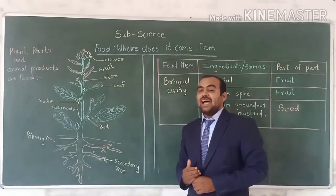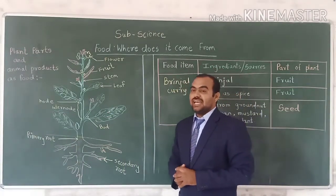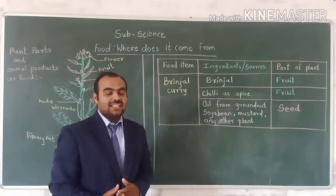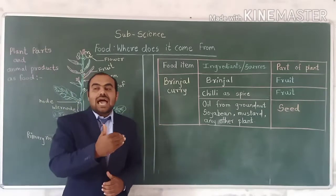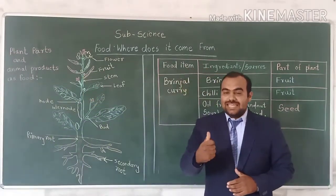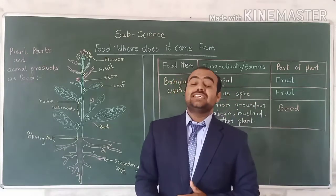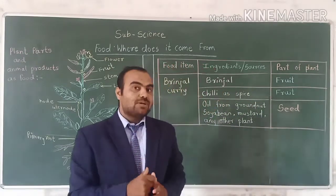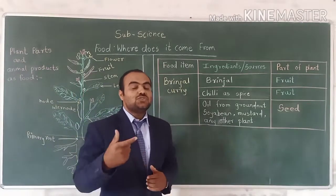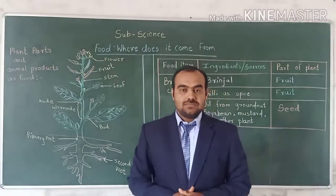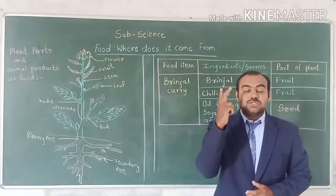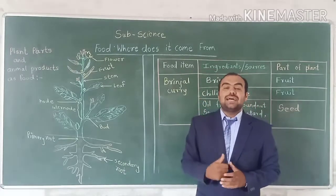If we observe the mustard plant, it has a stem, leaves, and seeds. We are using the seeds to obtain edible oil. And the leaves we are using for making a leafy vegetable. So in that plant, we are using two parts of the plant.